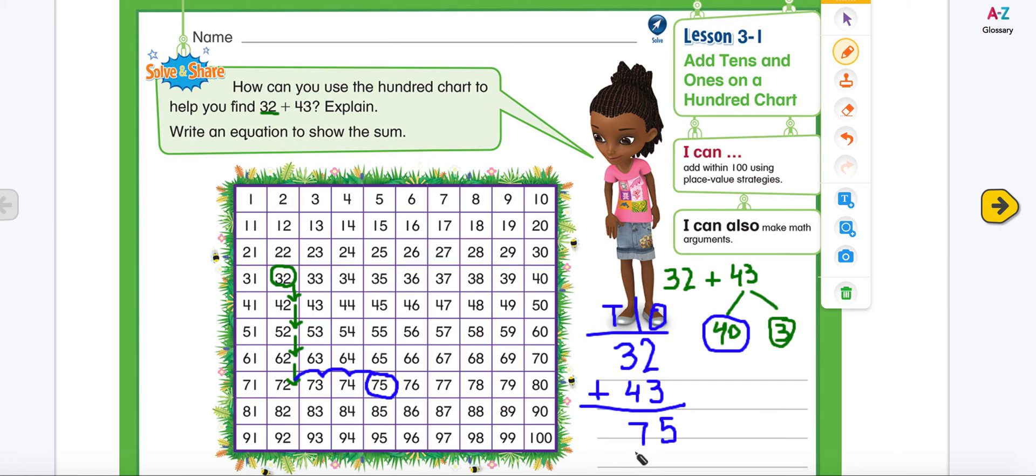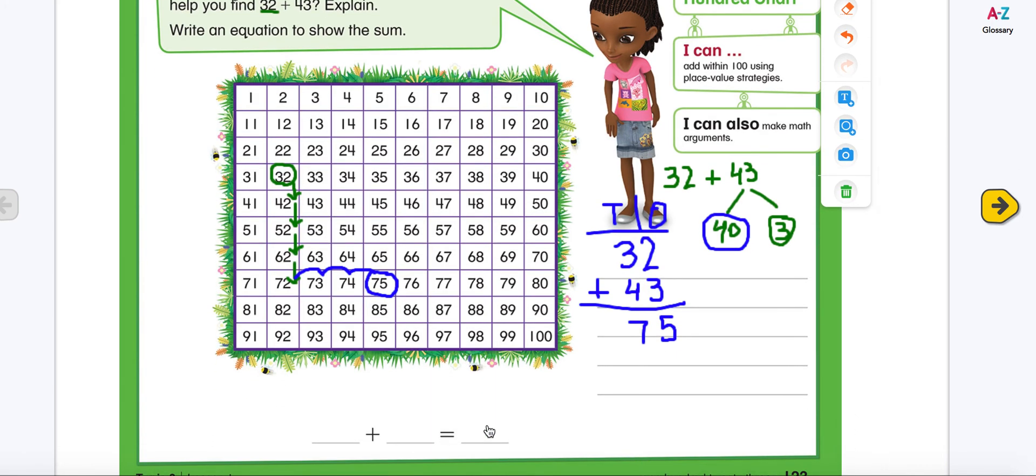That means my strategy is correct. So what will be my equation? My equation will be 32 plus 43 equals 75. So this is the sum, and these two are addends. So 32 and 43 are addends, and our sum is 75. So boys and girls, make sure you complete the rest of the pages. Do the quick check. Watch the video. And I'll see your work. Thank you.